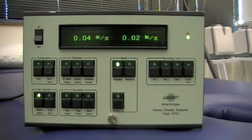The air velocity, the air movement in the room, it's 0.04 meters per second. On the right hand side is a running average, 0.02 meters per second. So not very much air movement currently here.